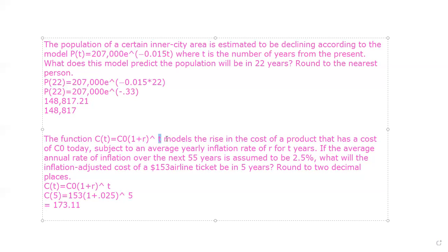So this T right here is an exponent and it models the rise of cost that has a cost of C0 today. That's going to be really important. Subject to average yearly inflation for an interest rate of R for two years.